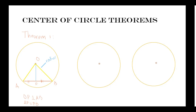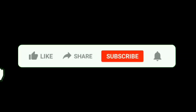Let's have a look at our second theorem. Theorem 2 states that the angle that the arc of a circle subtends at the center is double the angle that is on the circle or the circumference.